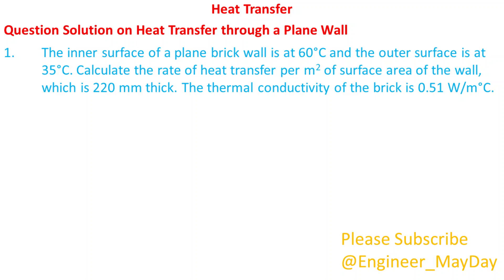The inner surface of a plain brick wall is at 60 degrees Celsius and the outer surface is at 35 degrees Celsius. Calculate the rate of heat transfer per square meter of surface area of the wall, which is 220 millimeters thick. The thermal conductivity of the brick is 0.51 watts per meter per degrees Celsius.